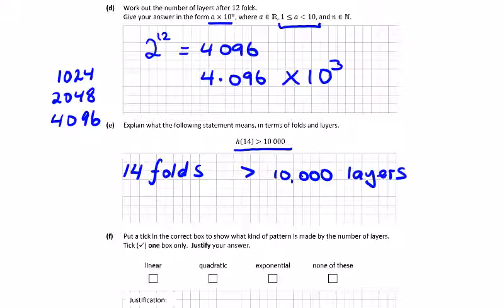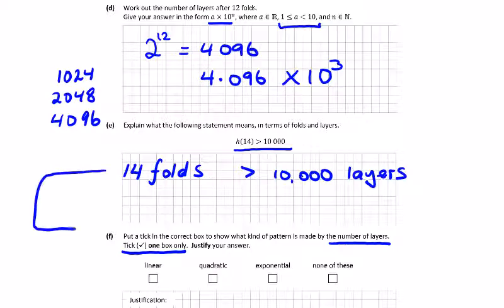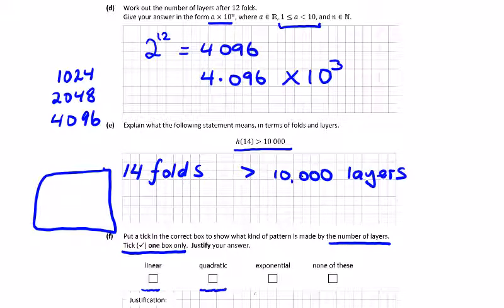Then put a tick in the correct box to show what kind of pattern is made by the number of layers — tick one box only. Think about: linear means constant first difference, quadratic means constant second difference, exponential means a power, and then there's 'none of these.' Our pattern is 2 to the power of n, so it's exponential — we have a power.